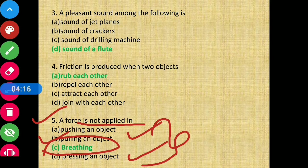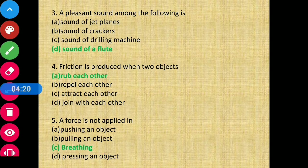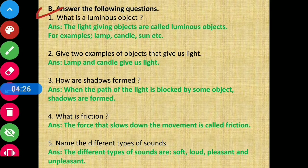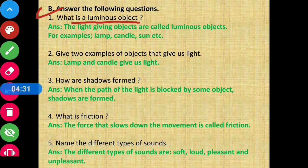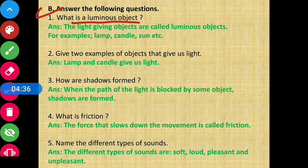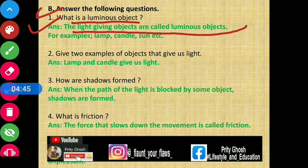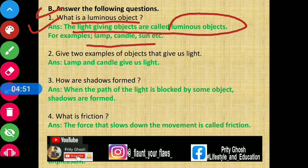Next is Section B: Answer the following questions. First question: What is a luminous object? We just discussed this in the multiple choice section - luminous objects are things that give light on their own. The light-giving objects are called luminous objects. Examples are lamp, candle, sun, etc.